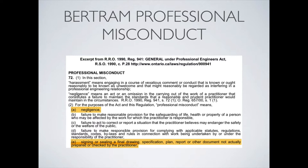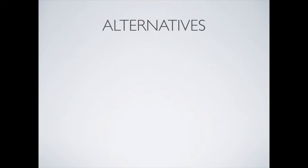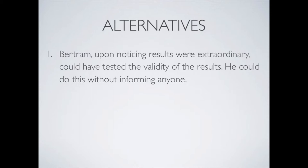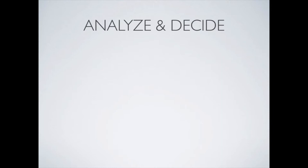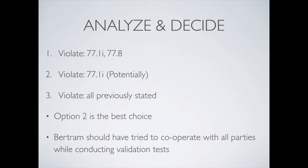Some of the alternative decisions Bertram could have made include: Option 1, Bertram could have validated the results without informing anyone. Option 2, Bertram could have validated the results while informing all necessary parties. And Option 3, Bertram could have done nothing. Analyzing the alternatives, we see that Option 2 commits the least violations, and is therefore Bertram's best option.